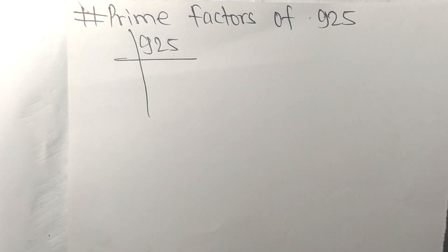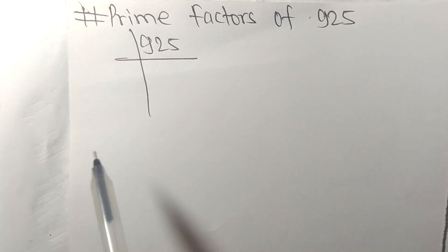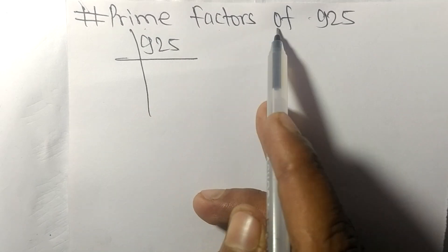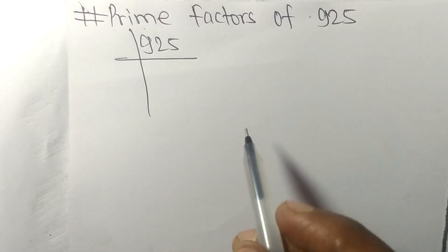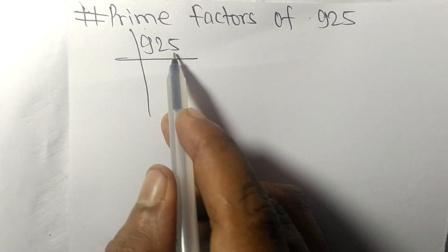Today in this video we shall learn to find the prime factors of 925. It contains 5, so whole numbers ending in 5 are divisible by 5.